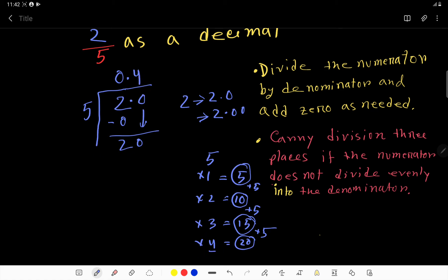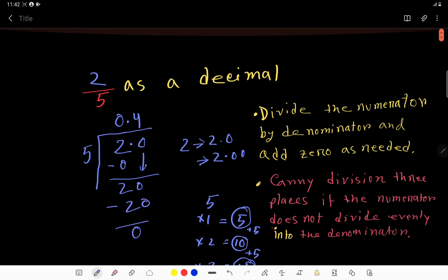4 times 5 is 20, so your remainder is 0. Therefore, you can say that 2 by 5 as a decimal is 0.4.